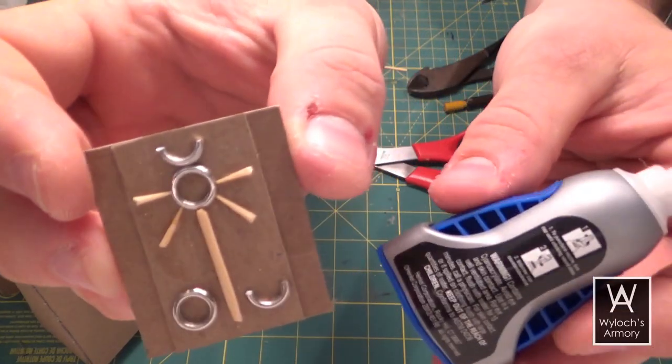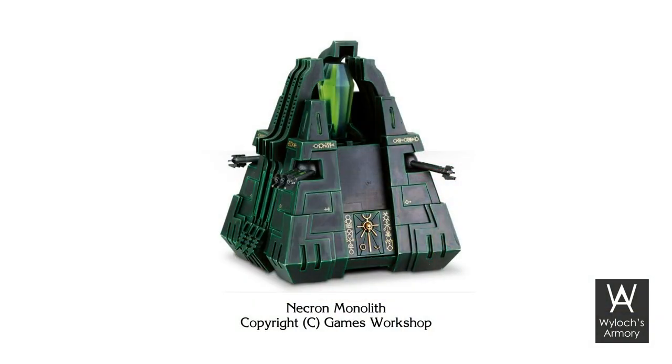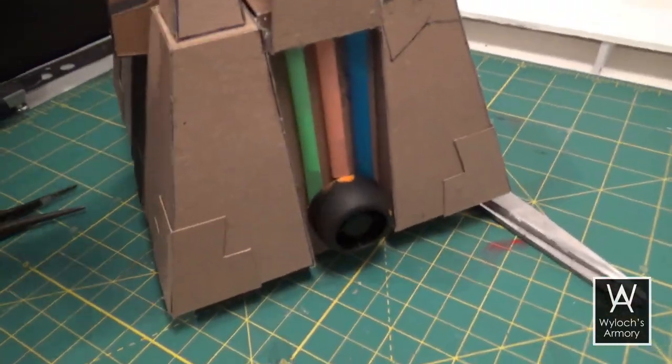Then I raided my bead collection and found some circular metal bits and chopped those as well as some toothpicks, attaching them with super glue to recreate the icon from the inspirational image. Set the door aside for now.